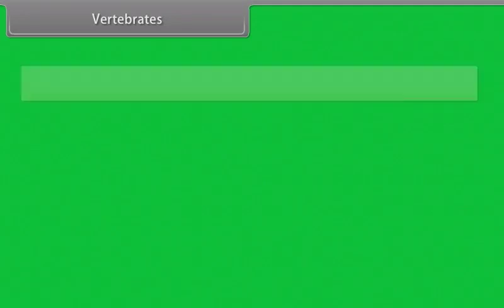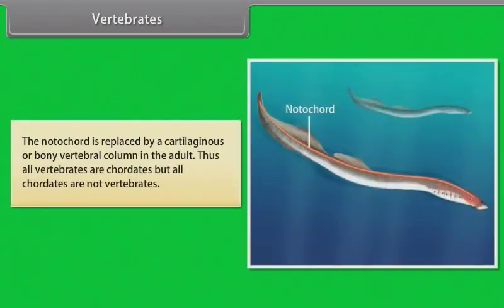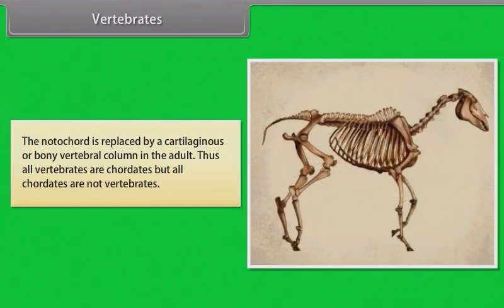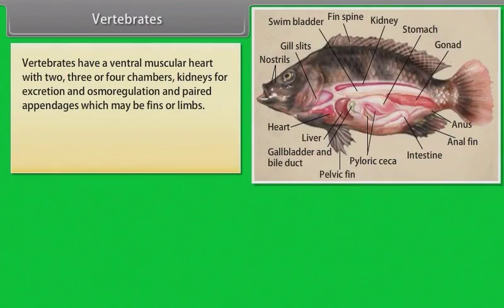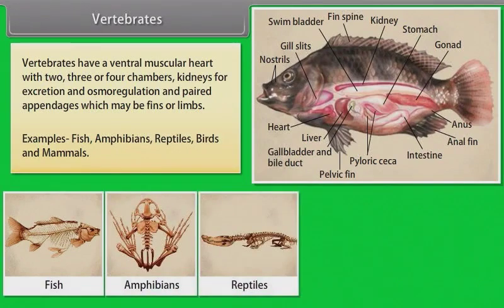Vertebrates: The members of vertebrata possess notochord during the embryonic period. The notochord is replaced by a cartilaginous or bony vertebral column in the adult. Thus, all vertebrates are chordates, but all chordates are not vertebrates. Vertebrates have a ventral muscular heart with two, three or four chambers, kidneys for excretion and osmoregulation, and paired appendages which may be fins or limbs. Examples: fish, amphibians, reptiles, birds and mammals.